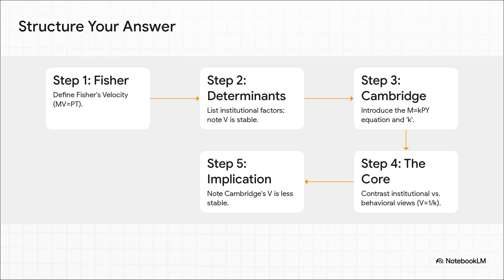Finally, you bring it home with a big implication in step five. Because Cambridge's V is based on human choice, it's way less stable. You follow this structure, you've built an airtight answer.